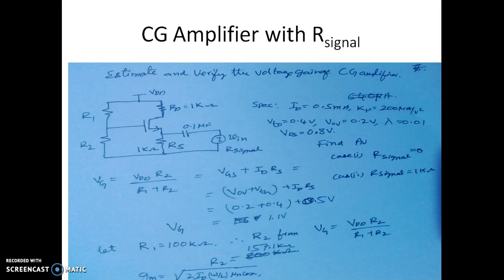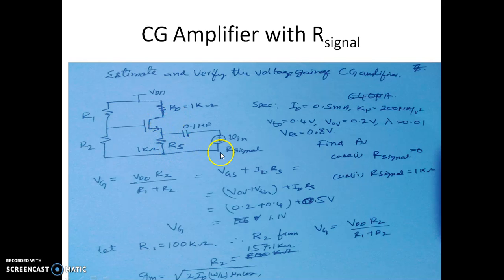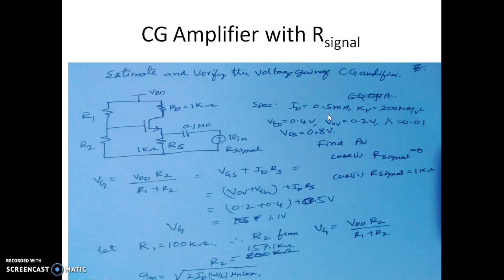This is the practical CG amplifier circuit. The resistors R1 and R2 form a voltage divider to provide the required gate bias voltage VG. RD is the drain resistor from which the output voltage is taken. RS provides the path for the DC bias current ID. The input voltage with source resistance R_signal is applied through a coupling capacitor.